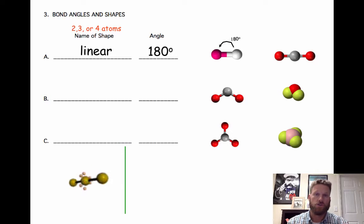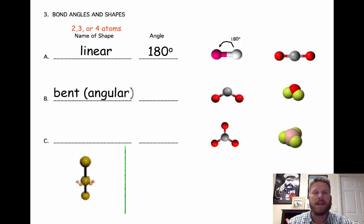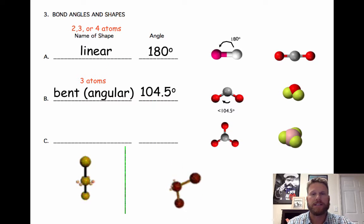We have to construct those molecules to be able to tell what shape they are. Now the next shape you see is a bent shape or an angular shape. These molecules have 104.5 degree bond angles. These will only form when you have three atoms that are bonding together.